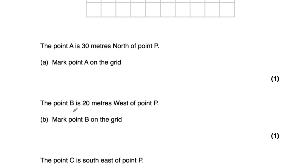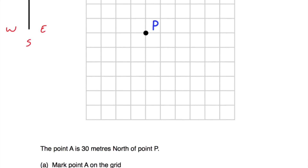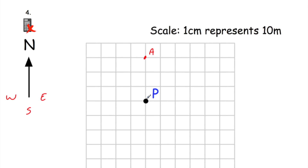The next part says point B is 20 meters west of point P. We're going to go to point P and go 20 meters west. West is to the left. 20 meters is 2 centimeters, because 1 centimeter is 10 meters, so 2 centimeters represents 20 meters. We want to go 2 centimeters to the left — using the ruler, that's 1, 2 centimeters — and that would be point B.